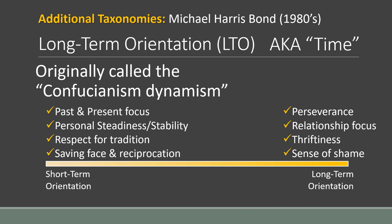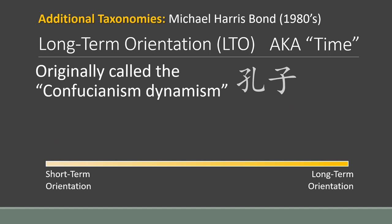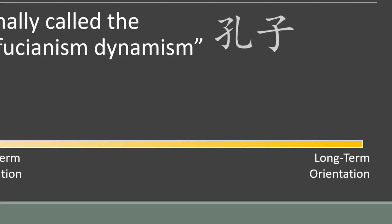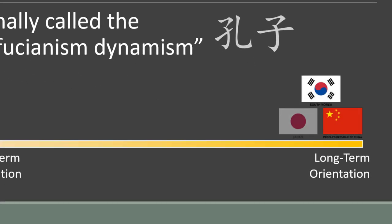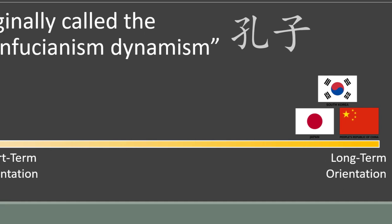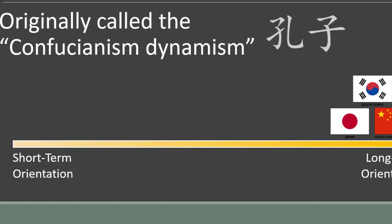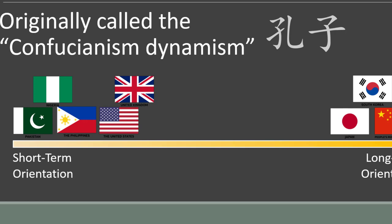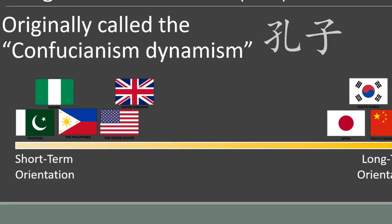With its roots in Asian values influenced by the teachings of Confucius, it's not surprising that the countries scoring the highest—having a long-term orientation—are Asian countries. On the other side, embracing more of a short-term orientation are Pakistan, Nigeria, and the Philippines. And yes, the U.S. and the U.K. are somewhere close to the short-term orientation side.